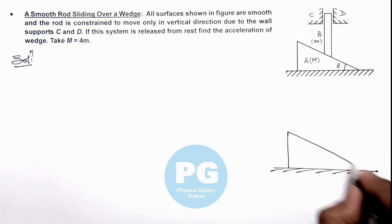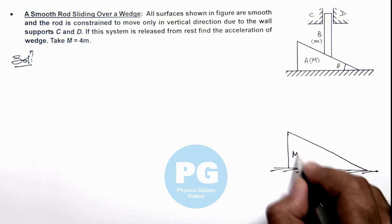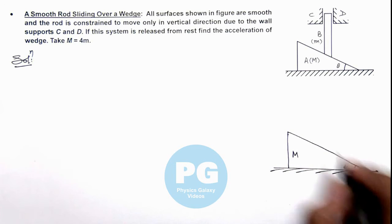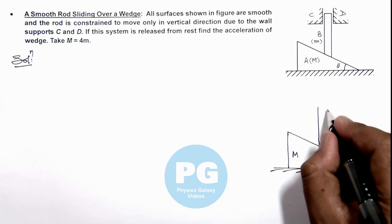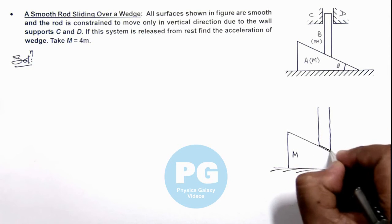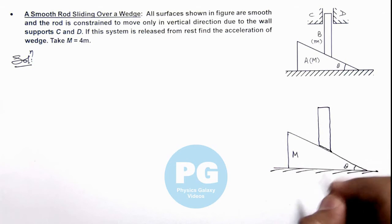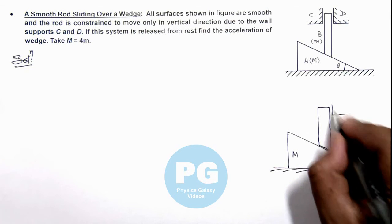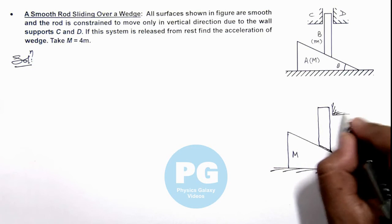Let me redraw the figure. This is the wedge of mass M having inclined surface at an angle theta. And this is the rod which is smoothly placed on the wedge, which is supported by the support C and D.